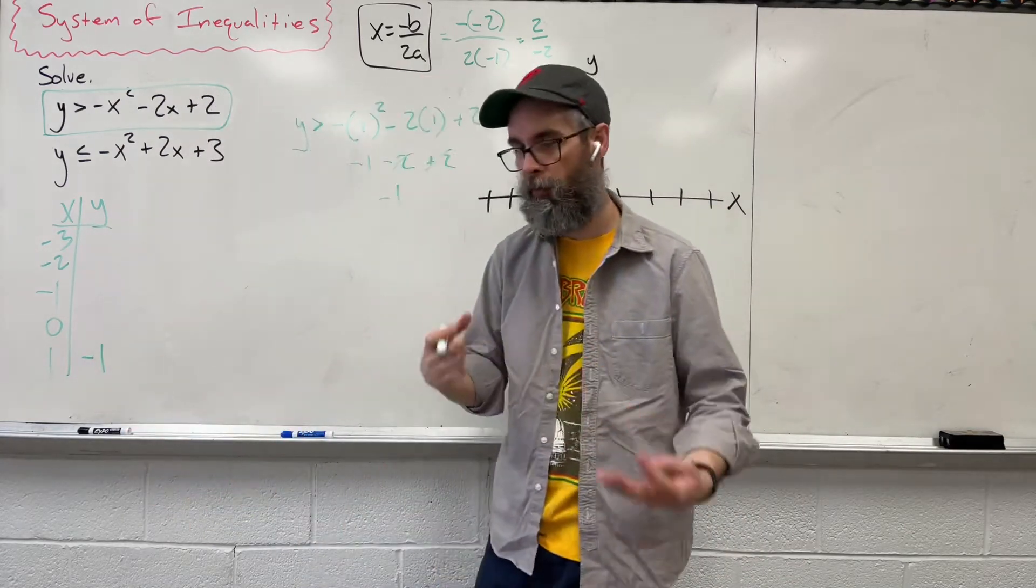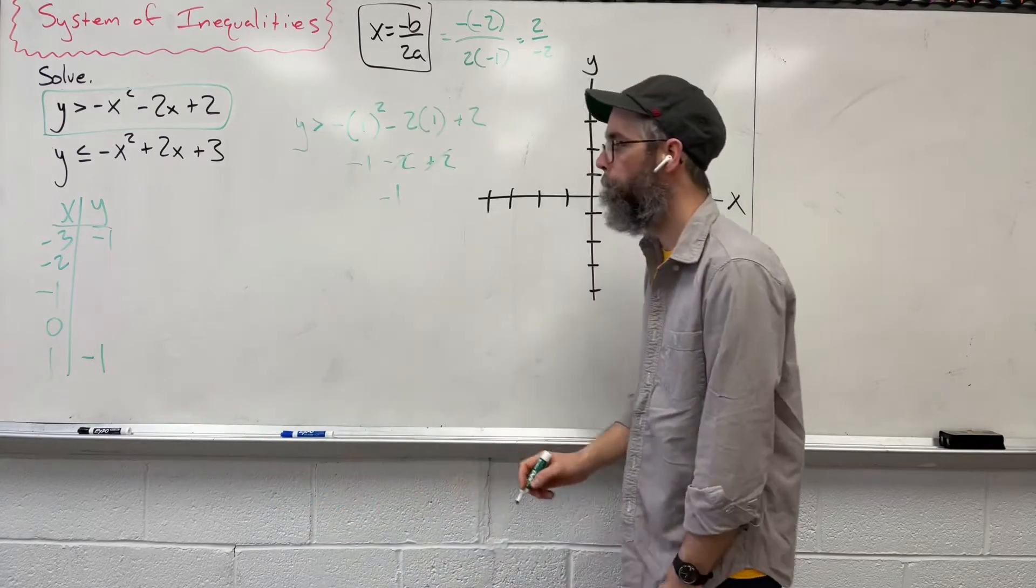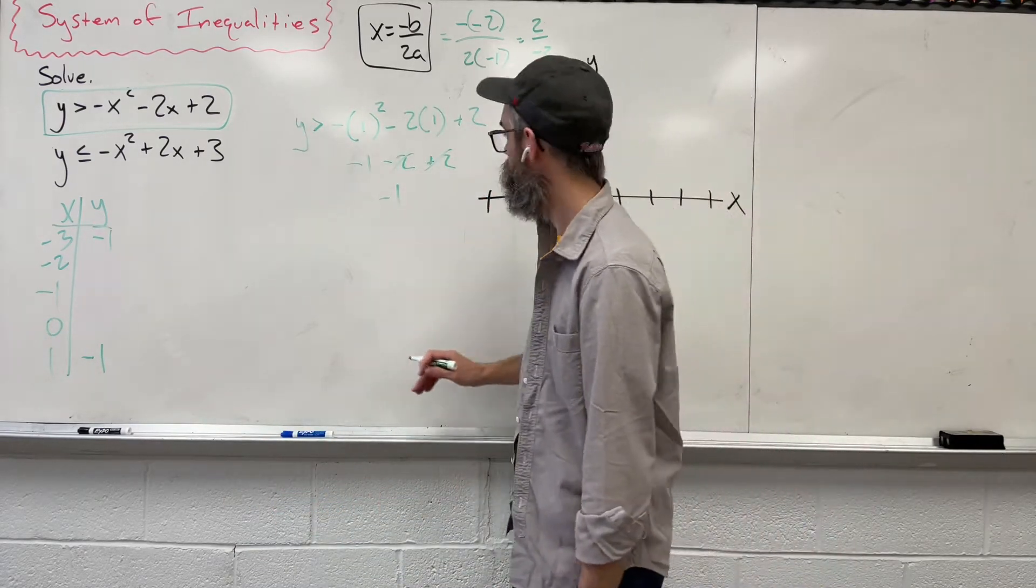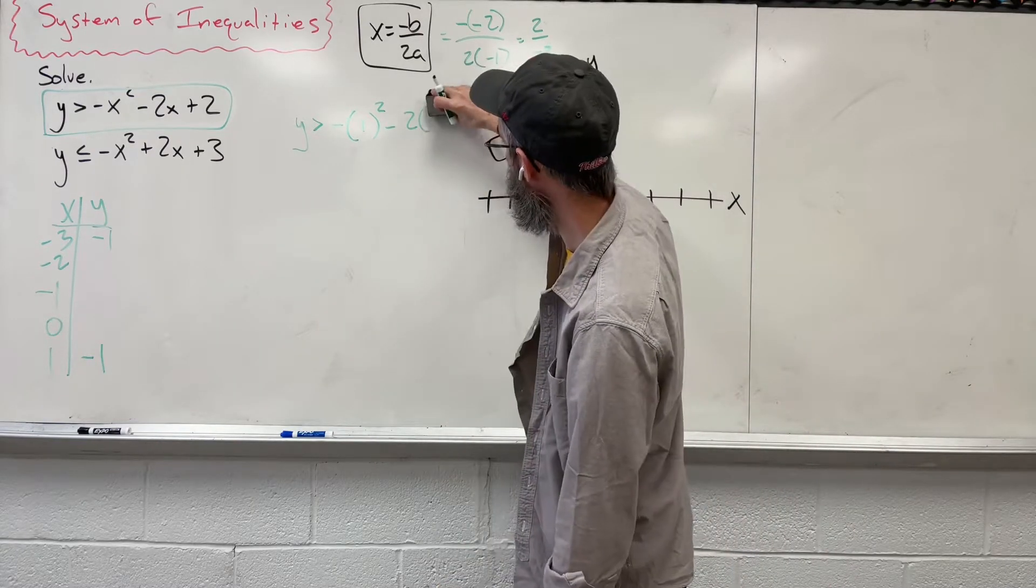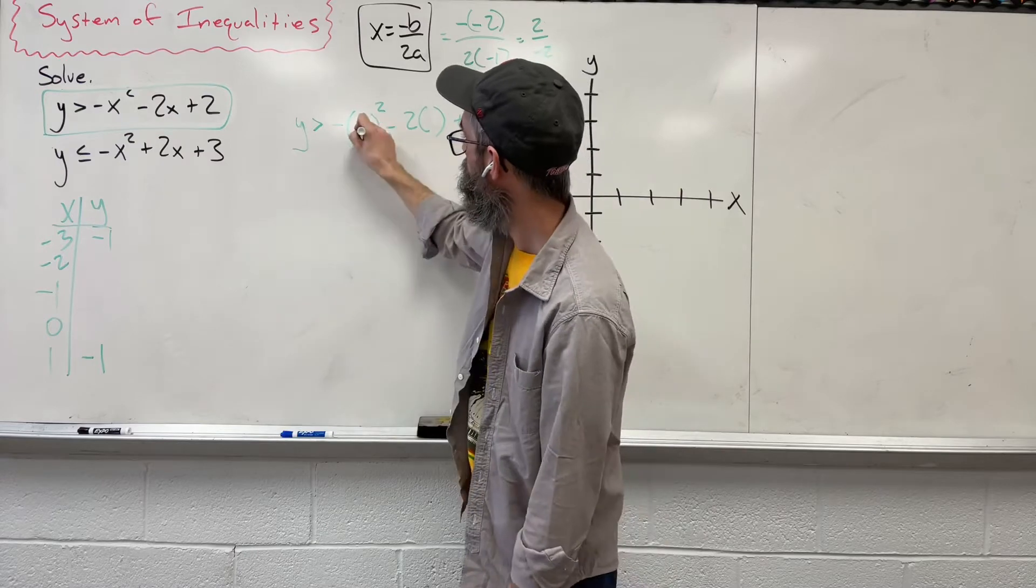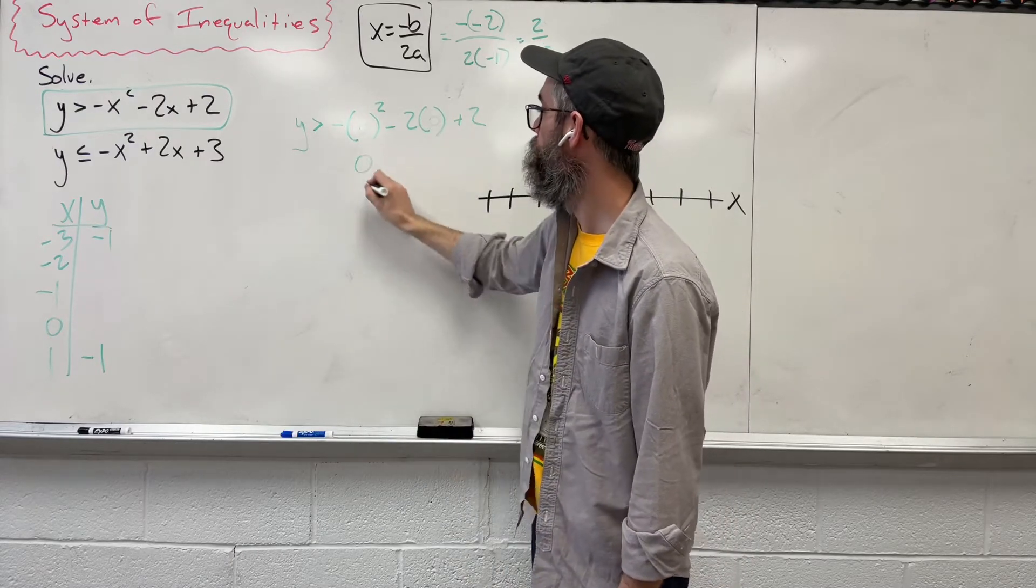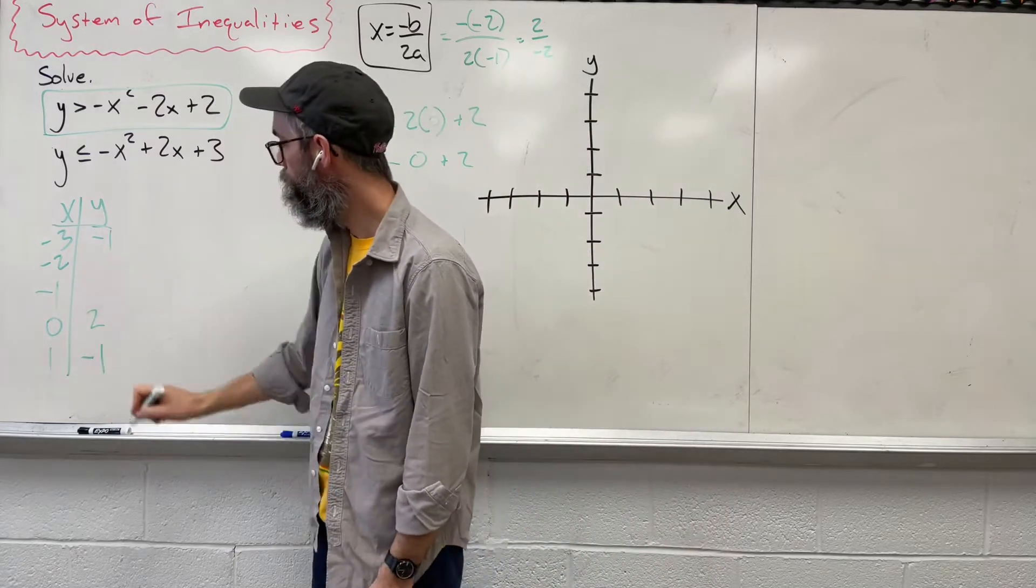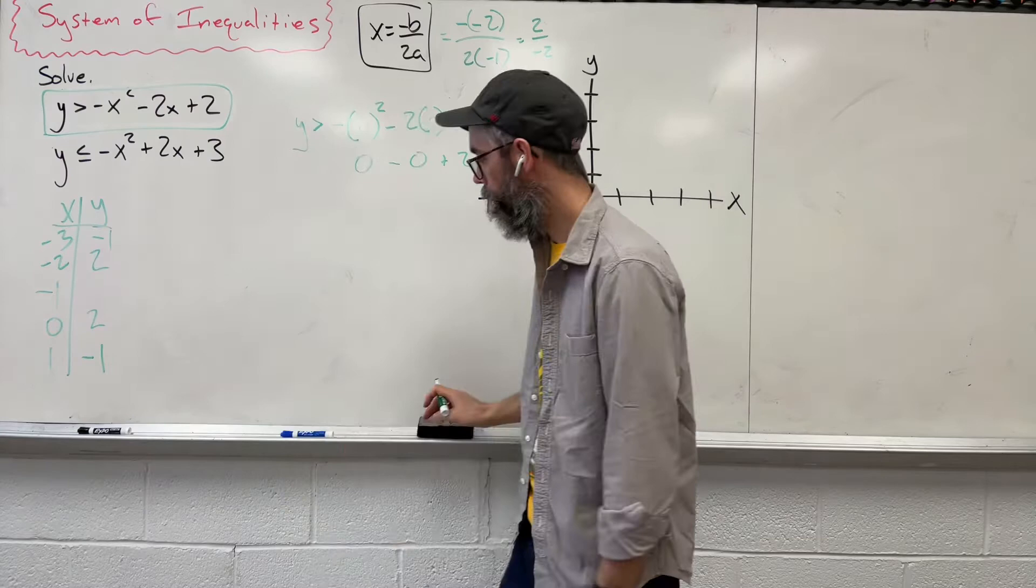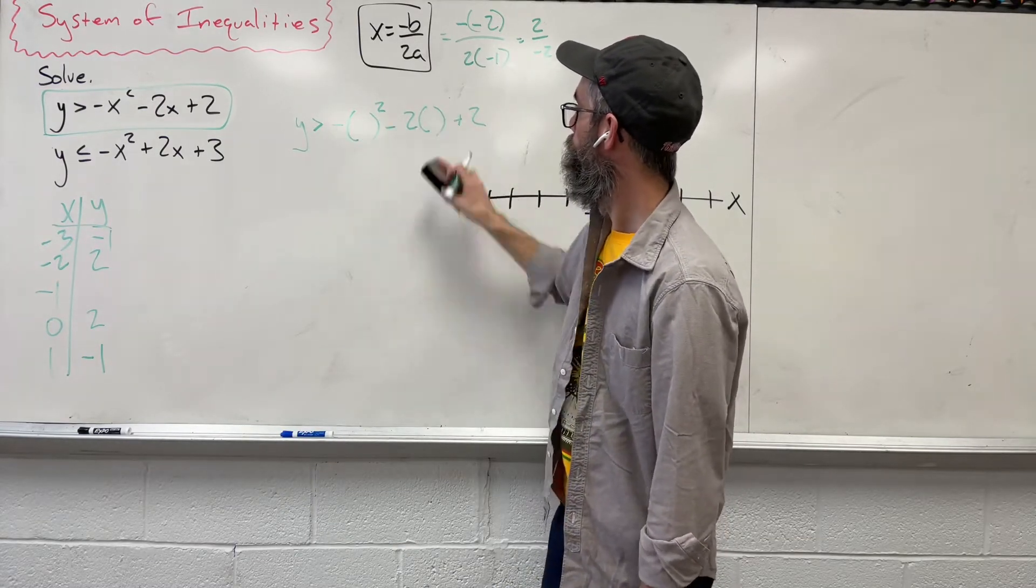So because we have a parabola, if this is negative 1, our answer up here is going to be negative 1. We got to do this all again, but this time instead of plugging in 1, we'll use 0. So 0 squared is going to give us 0 minus 0 plus 2, which is just 2. And we repeat our answer up there.